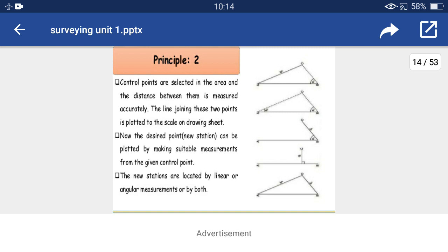The second basic principle of surveying is to locate a point by at least two measurements. Control points are selected in the area and the distance between them is measured accurately. The line joining these two points is plotted to scale on a drawing sheet. The desired new station can then be plotted by making suitable measurements from the given control points, whether linear or angular.